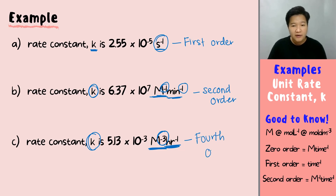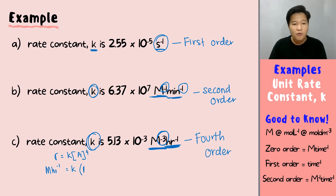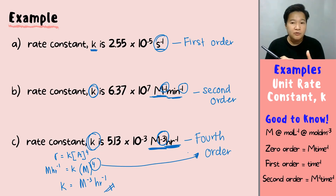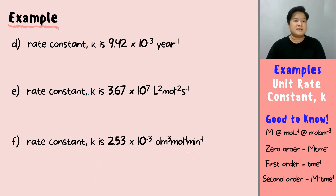Next, if the rate constant k is given in units of M⁻³ hr⁻¹ — that is M⁻³ — which order does this belong to? This belongs to the fourth order. You can verify by writing the rate law: with concentration to the power of four, k = (M/hr) / M⁴ = M⁻³ hr⁻¹. So it is a fourth order reaction.